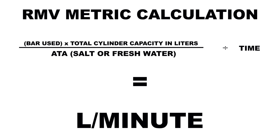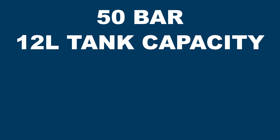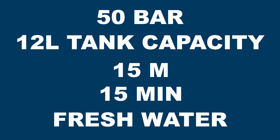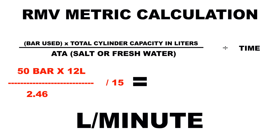We're going to start with metric. To find your RMV in liters per minute, take the bar used during your gas consumption run test and multiply that by the total cylinder capacity in liters. Divide that by the absolute pressure, then divide the whole thing by the time of your gas consumption run in minutes. Let's do an example: say you use 50 bar on a single tank with a 12-liter capacity, swimming at 15 meters for 15 minutes in fresh water. So: 50 bar times 12 liters, divided by 2.46 (the absolute pressure in fresh water at 15 meters), divided by 15 minutes. That gives you 16.2 liters per minute.